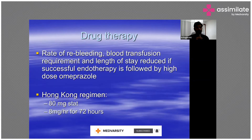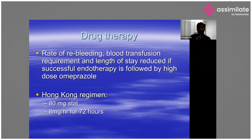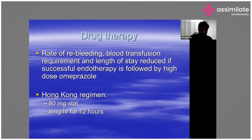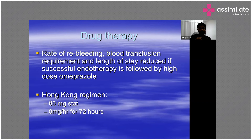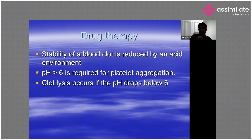Drug therapy determines the rate of re-bleeding, blood transfusion requirement, and length of stay — all reduced if successful endotherapy is performed. High-dose PPIs also play a big role in preventing re-bleeding. The regimen commonly used — which everyone must remember — is the Hong Kong regimen: when a patient comes in with suspected upper GI bleeding, give an 80 mg bolus dose of a PPI such as esomeprazole, Nexium, or pantoprazole, followed by an 8 mg per hour IV infusion for 72 hours.